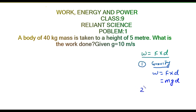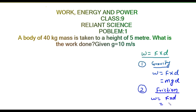The second type is work done against friction. In this case, we use Work = Force × distance, where Force = mass × acceleration. But note that in the gravity case, the acceleration used is g, the acceleration due to gravity.